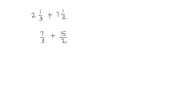Now you can see that we have different denominators, and you cannot add fractions with different denominators — you need the denominators to be the same. In order to make the denominators the same, we need to multiply both fractions by something. What we're going to do is multiply each fraction by the other fraction's denominator.